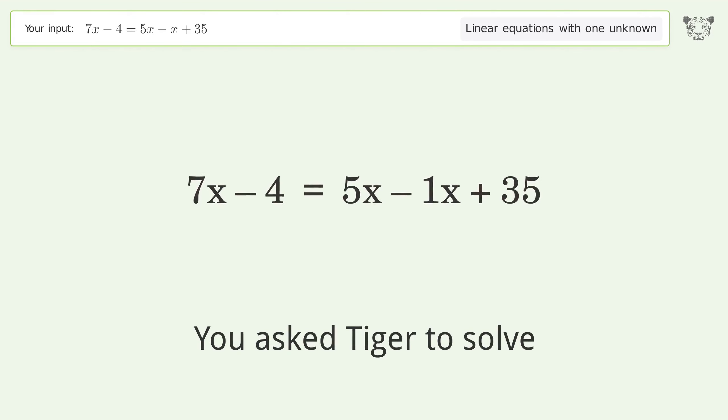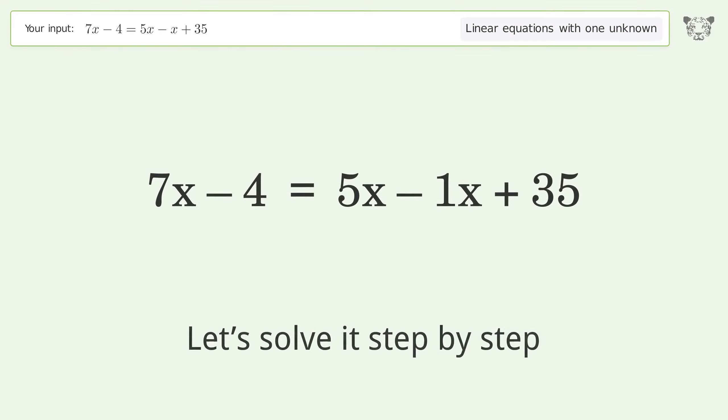You ask Tiger to solve this. It deals with linear equations with one unknown. The final result is x equals 13. Let's solve it step by step. Simplify the expression. Simplify the arithmetic.